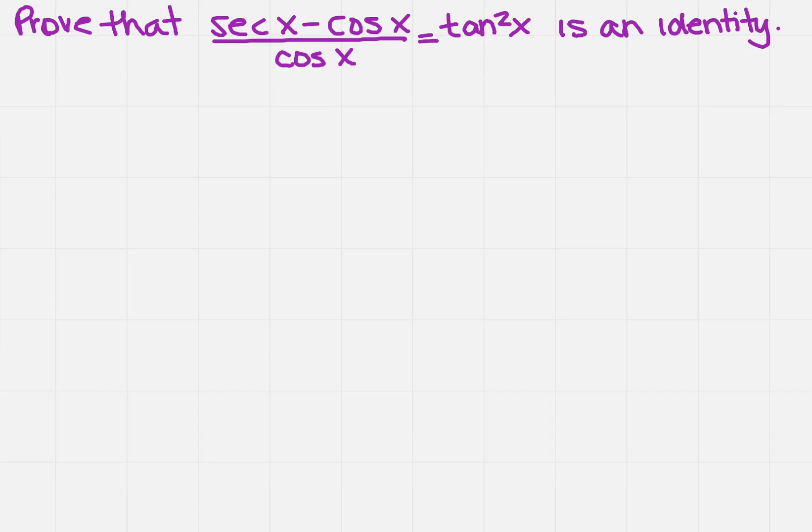Prove that secant x minus cosine x all over cosine x equals tangent squared x is an identity. Make sure you have all of your identities near you, all of your true statements, so that you know exactly how and what you can plug into the left-hand side of this equation.